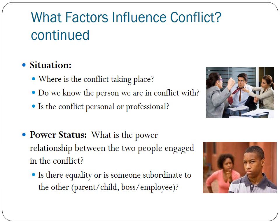Then we have power status — what is the power relationship between the two people engaged in the conflict? Is there equality or is someone subordinate? A parent or child, or boss or employee — this power status makes the relationship more subordinate. A child is only going to push back so much, especially if the parent is very authoritarian. Same thing with boss and employee — you're only going to push so much if you know your boss could fire you.